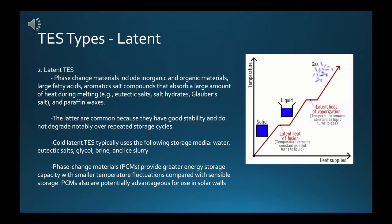Paraffin waxes are common because they have good stability and do not degrade notably over repeated storage cycles. The phase change material in latent TES can be contained in a single large vessel or in small modules such as rods or plastic containers, providing great flexibility. Latent heat TES can be used to store hot or cold. Cold latent TES typically uses water, eutectic salts, glycol, brine, and icy slurry. In solar combination systems, large solar fractions normally require larger water volumes, but PCMs offer more compact alternatives and can be advantageous for seasonal storage.